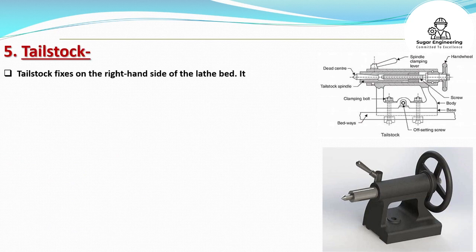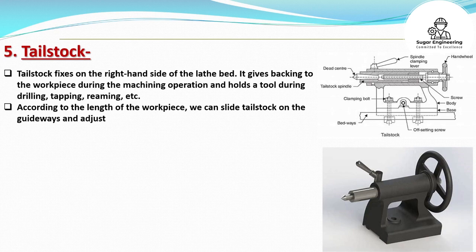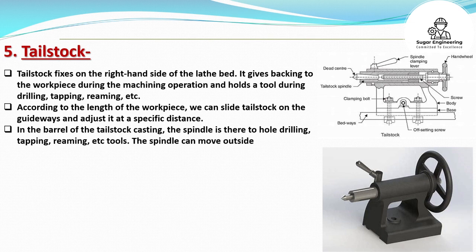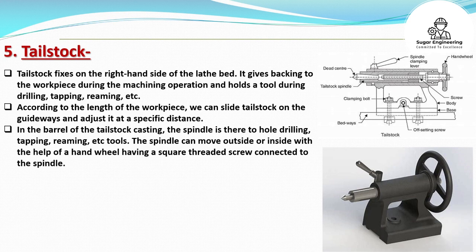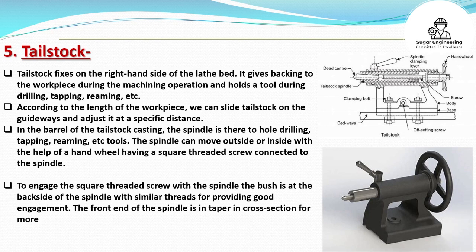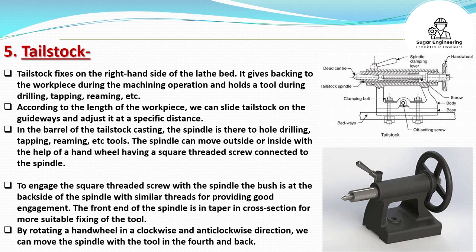Tailstock fixes on the right-hand side of the lathe bed. It gives backing to the workpiece during the machining operation and holds a tool during drilling, tapping, reaming, etc. According to the length of the workpiece, we can slide the tailstock on the guideways and adjust it at a specific distance. In the barrel of the tailstock casting, the spindle holds drilling, tapping, reaming, etc. tools. The spindle can move outside or inside with the help of a hand wheel having a square threaded screw connected to the spindle. The front end of the spindle is tapered in cross section for more suitable fixing of the tool. By rotating a hand wheel in a clockwise and anti-clockwise direction, we can move the spindle with the tool forth and back.